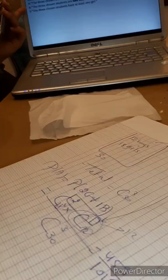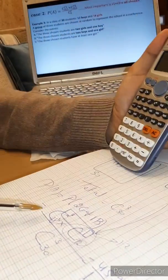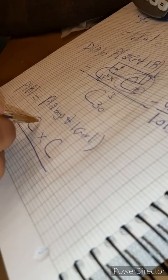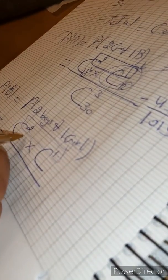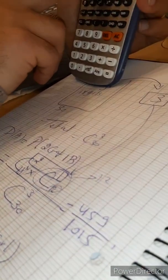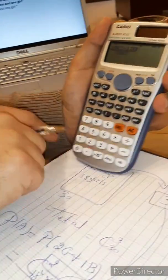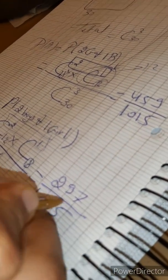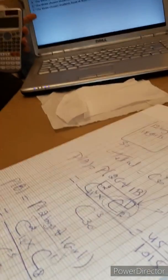Event B = two boys and one girl. Again two kinds, and 2 + 1 = 3. We need 2 boys out of 12 and 1 girl out of 18. P(B) = C(2) out of 12 × C(1) out of 18 over C(3) out of 30. On the calculator, change the values accordingly. The answer is 297 over 1015.